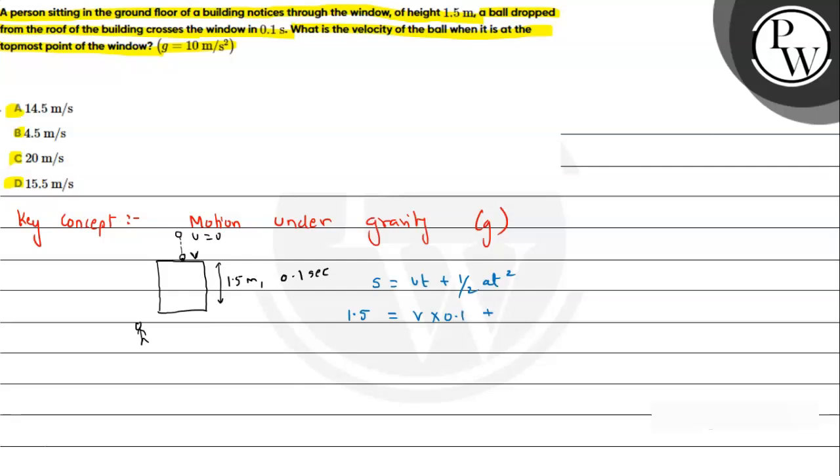Using s = ut + (1/2)at². Acceleration due to gravity will be 10, and t squared is 0.1 squared.